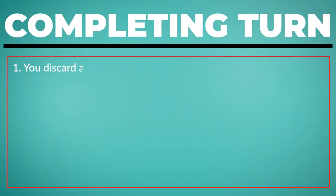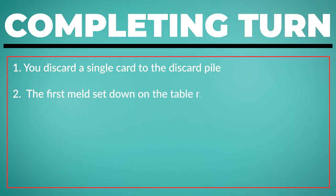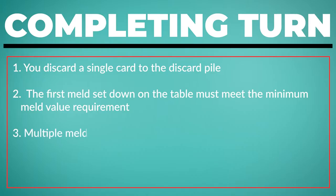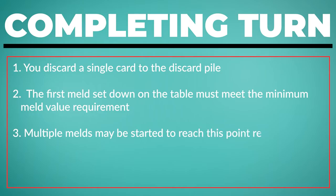To complete your turn, you discard a single card to the discard pile. The first meld set down on the table must meet the minimum meld value requirement. This is the total sum of the value of the cards placed. Multiple melds may be started to reach this point requirement.